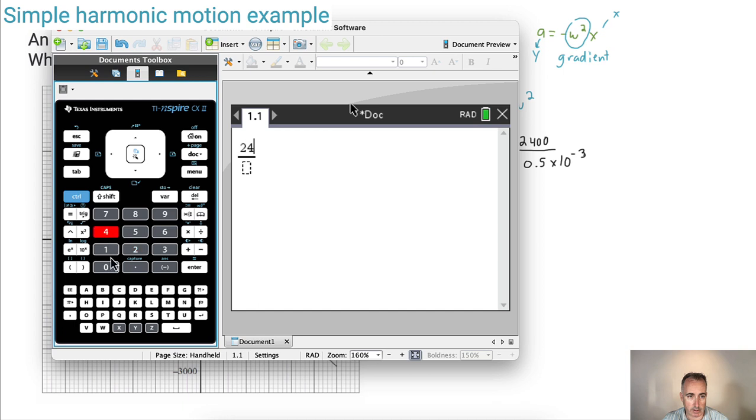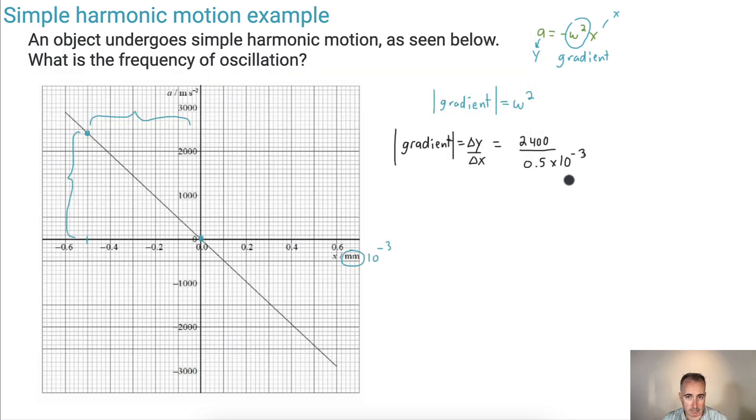I'm going to divide that by 0.5 times 10⁻³. And I get 4.8 × 10⁶. So that's my gradient. This is 4.8 × 10⁶. Now keep in mind, that's not everything I need. This is just the value of the gradient itself. Why is this helpful?